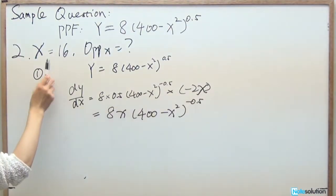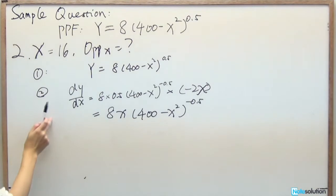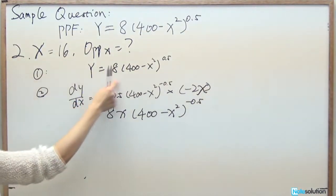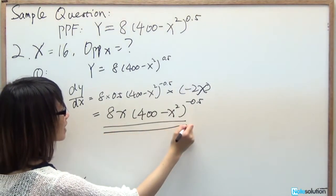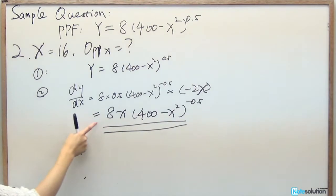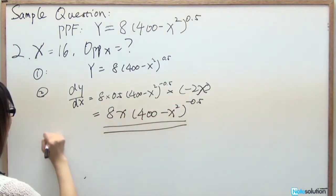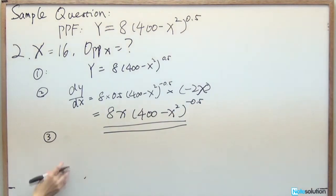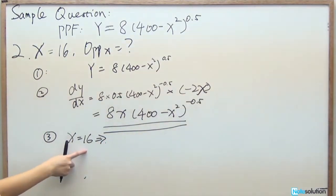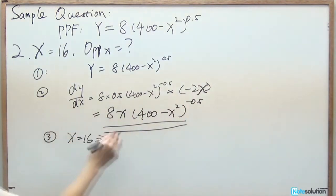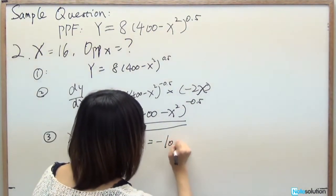The second sub-question gives X equals 16 and asks for the opportunity cost of X. Using the same PPF function and the same derivative dY/dX equals negative 8X times (400 minus X²) to the power of negative 0.5, we substitute X equals 16 to get dY/dX equals negative 10.67.